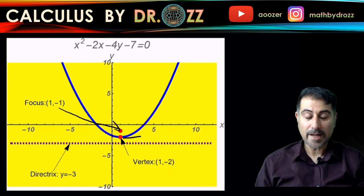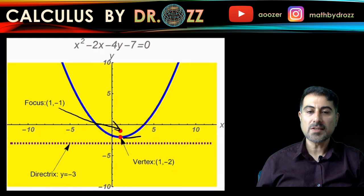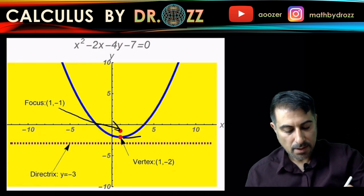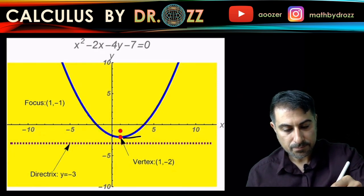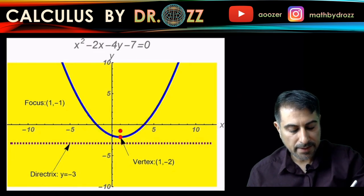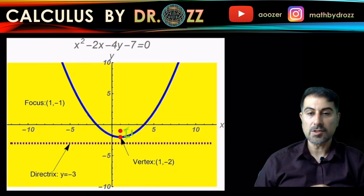Remember that p is the distance from the focus to vertex, and in our case, p was 1. So this distance here is one unit, as well as this distance. That's also one unit.